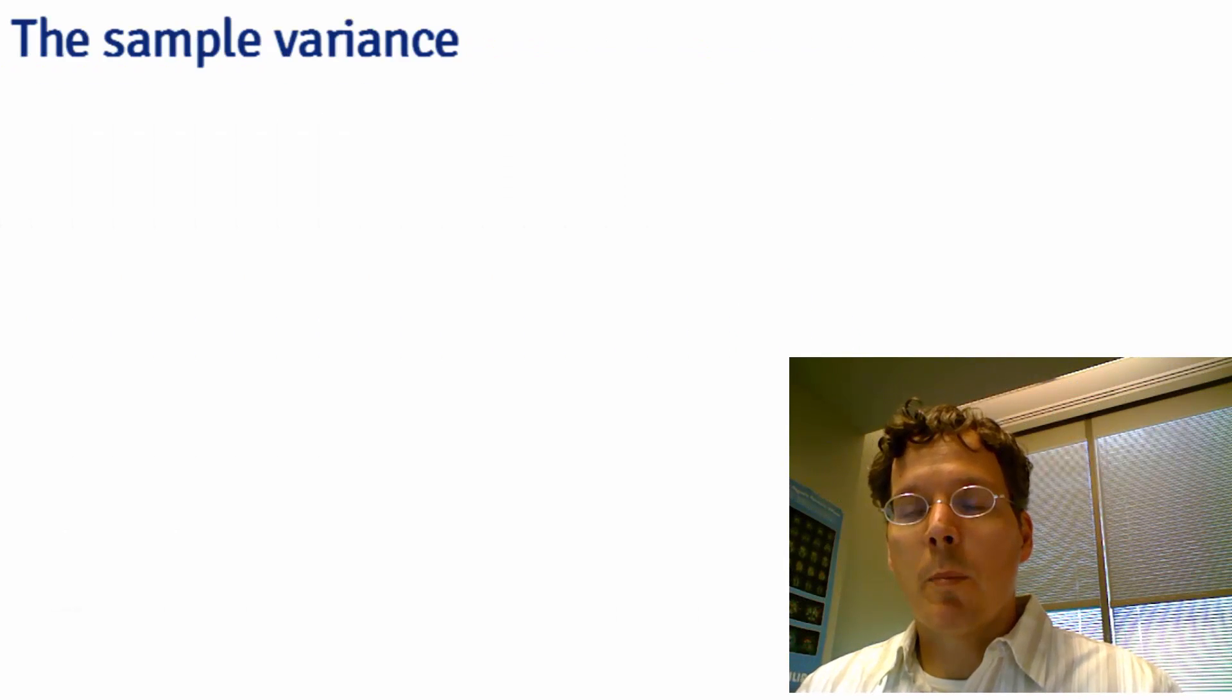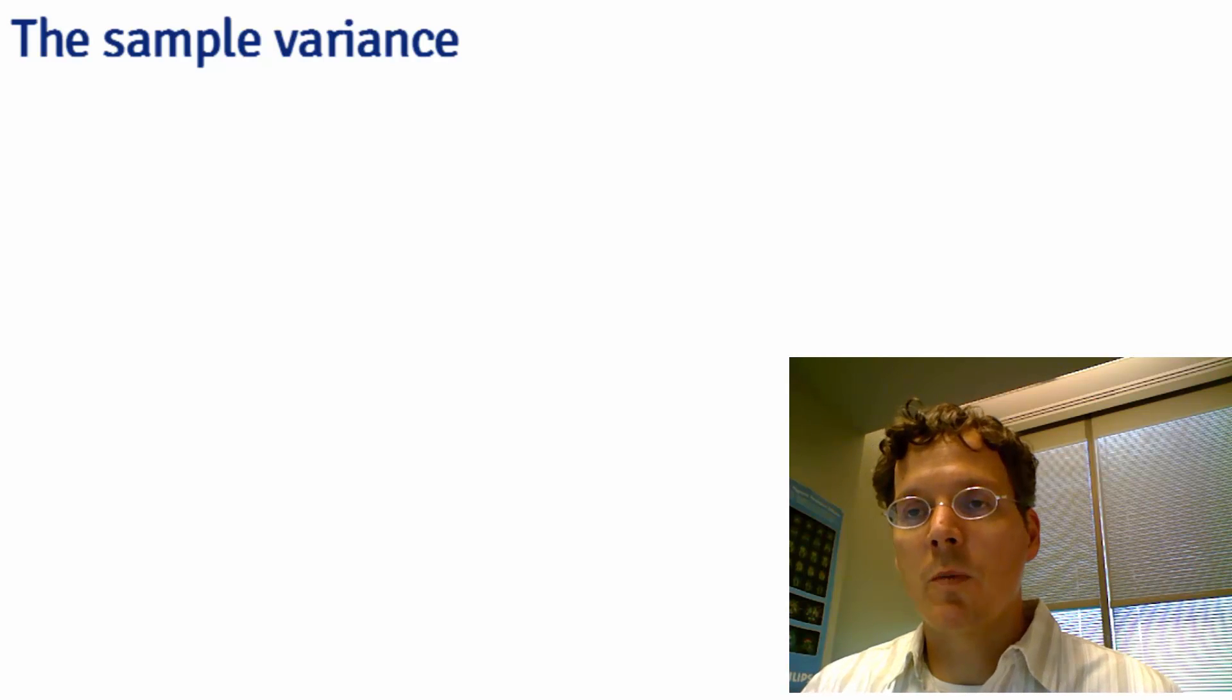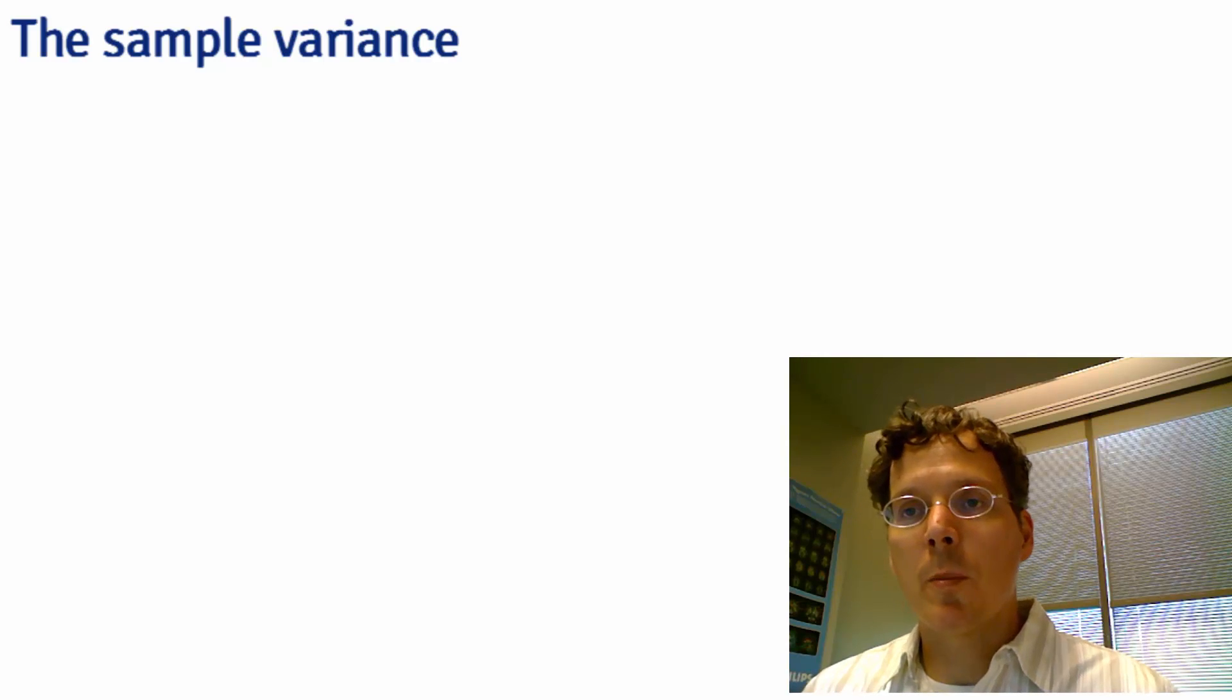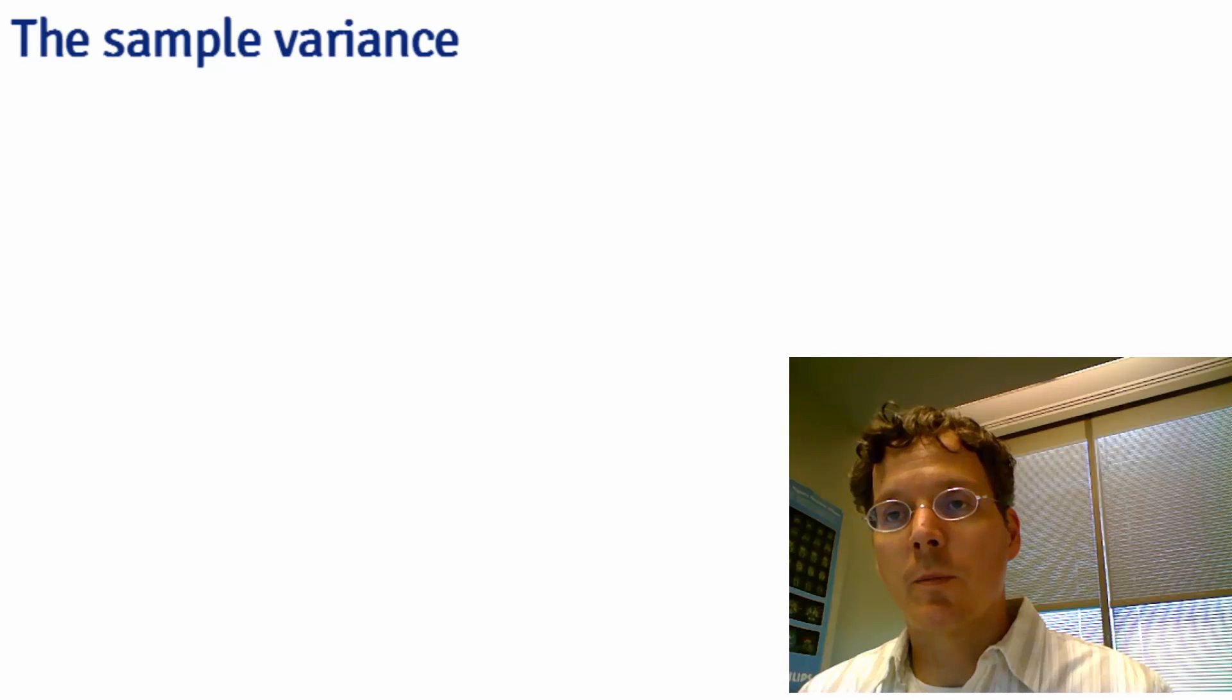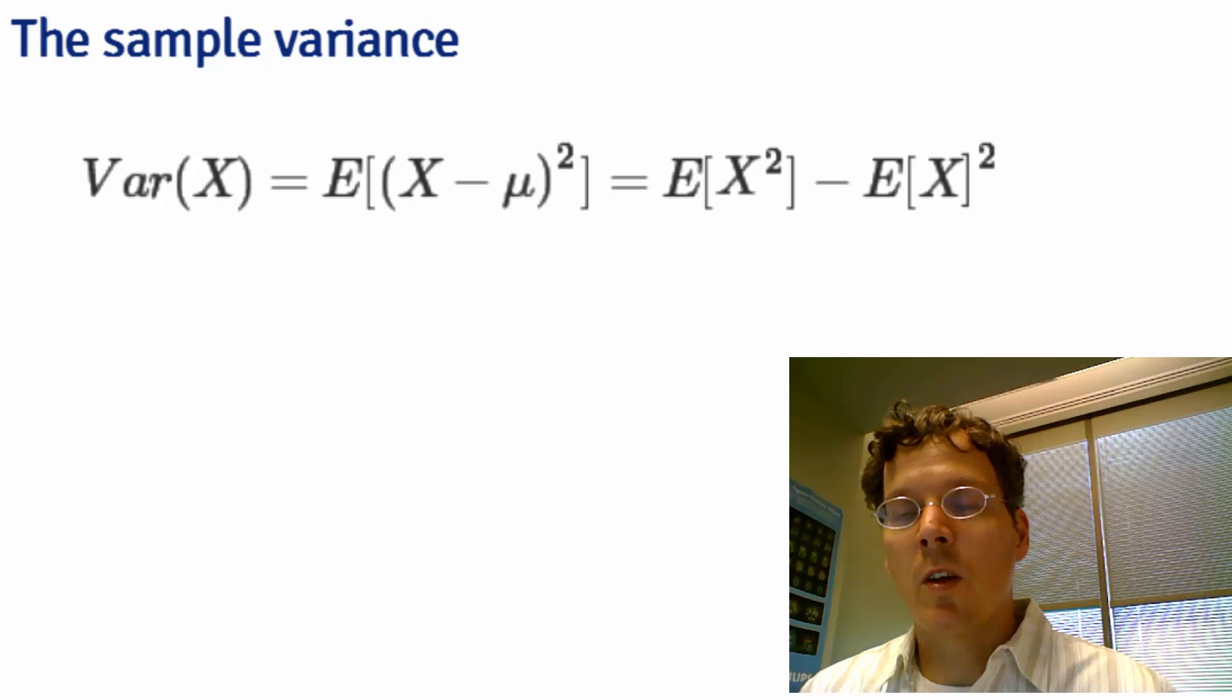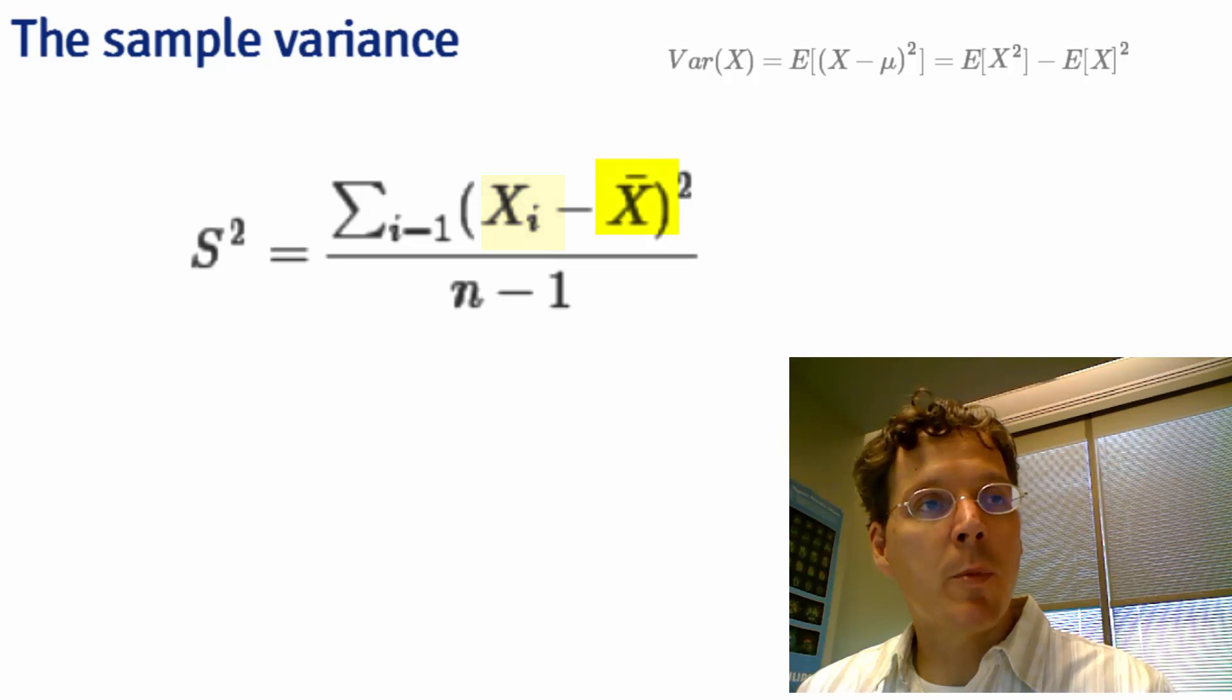Just like the population mean and the sample mean were directly analogous, the population variance and the sample variance are directly analogous. The population mean was the center of mass of the population; the sample mean was the center of mass of the observed data. The population variance is the expected squared distance of a random variable from the population mean. The sample variance is the average squared distance of the observed observations minus the sample mean.